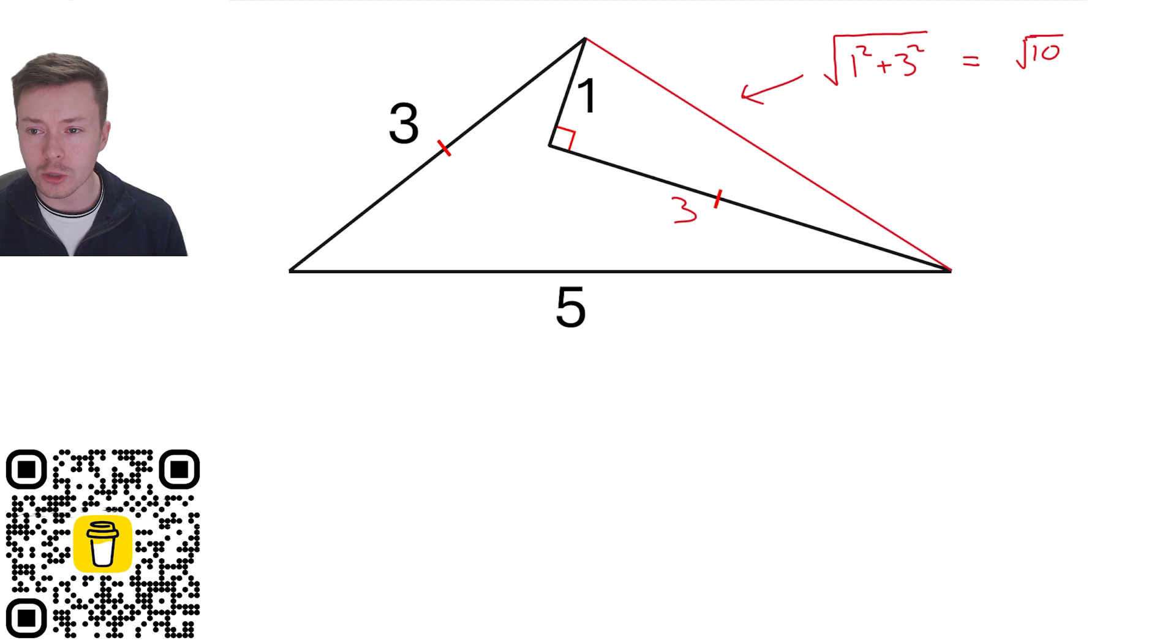The next thing is to work out the length of that side. Because it's a right angle triangle, we can use Pythagoras. So one squared plus three squared and square root it gives us the length which is root 10.